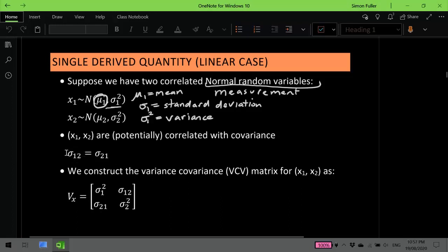So this term here is the covariance term and that's how we quantify correlation between our two measurements. And we can take that information on the variances and the covariances and turn it into a variance-covariance matrix which we represent by Vₓ.